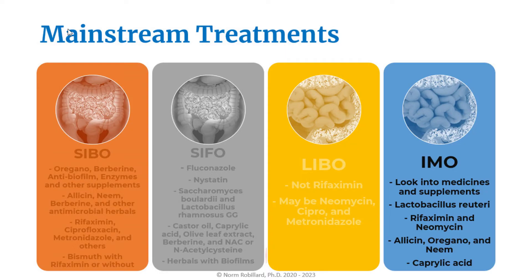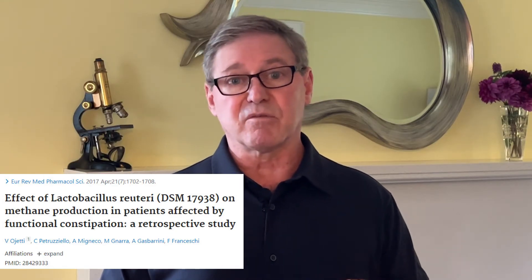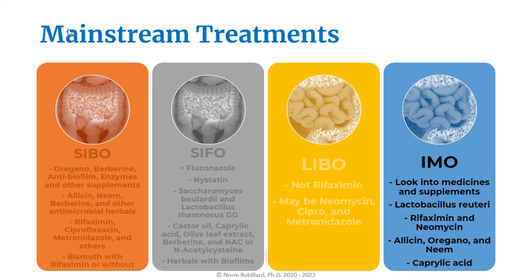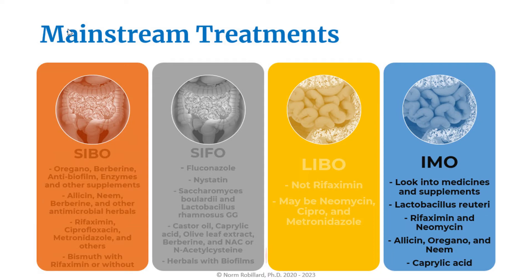What about IMO? If you're constipated, regardless of your methane levels, it's important to check any medications and even supplements you're taking for side effects, because many medicines cause constipation. The probiotic Lactobacillus reuteri is supported by at least one study showing it can reduce constipation and methane levels to some extent. For antibiotics, the top choice is a combination of rifaximin and neomycin for inhibiting these methanogens. Herbals such as allicin, oregano, and neem may also help, but their efficacy has not been proven in scientific studies.